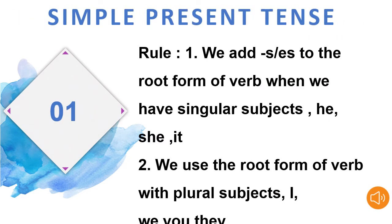Coming to the first topic of tenses, we have simple present tense. Let's go through the rules so that it is very clear how to use simple present tense. The first rule is we add s or es to the root form of the verb when we have singular subjects: he, she, or it. The next rule is we use the root form of the verb with plural subjects: I, we, you, or they.